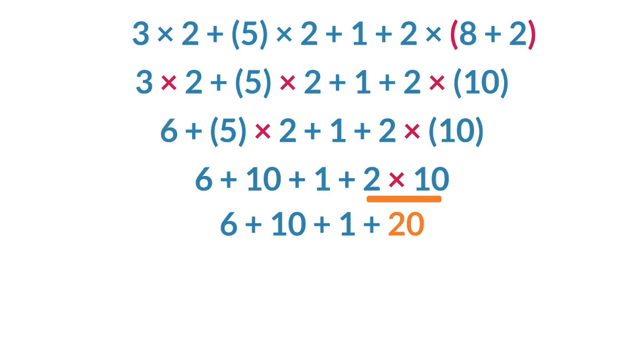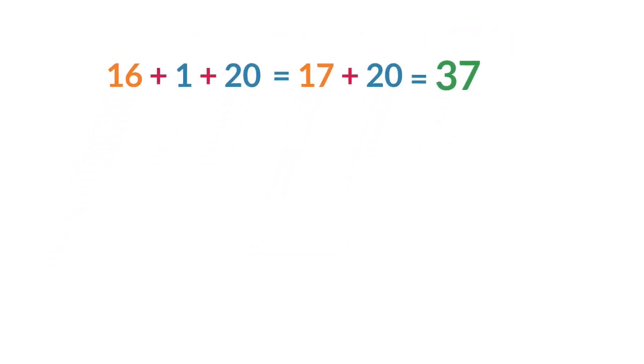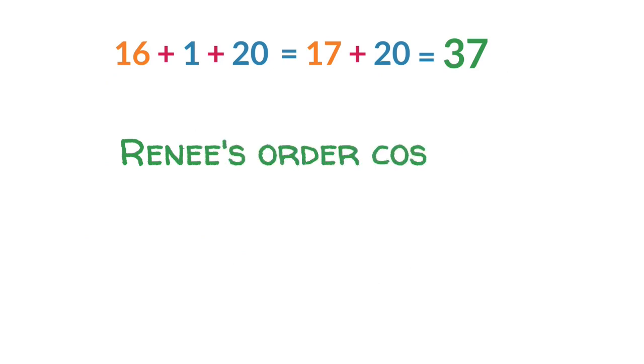Once the multiplication and division are finished, we move to the last step of addition and subtraction from left to right. Adding 6 and 10 gives 16. Then we add the 16 and 1. Finally, we add the 17 and 20 to get 37. Therefore, Renee's order will cost $37.